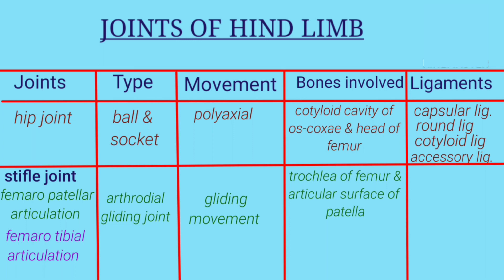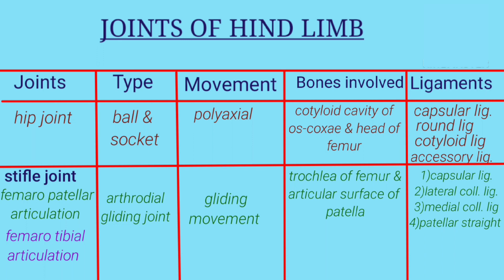Ligaments of femoropatellar articulation are capsular ligament, lateral collateral ligament, medial collateral ligament, and patellar ligaments — which include medial patellar ligament, middle patellar ligament, and lateral patellar ligament. Second is femorotibial articulation. The type of joint is hinge joint and movement is extension and flexion with limited rotatory movement.